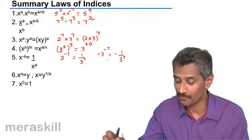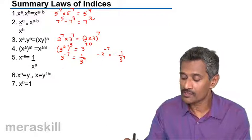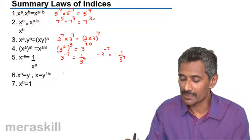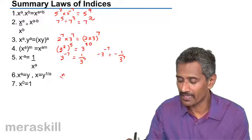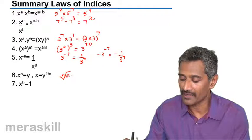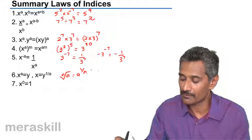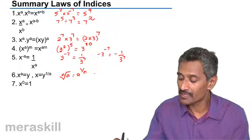Then of course, this is in simple words: it means that nth root of any number, nth root of a, is a raised to one by n. For example, seventh root of 10 is 10 raised to one by seven.